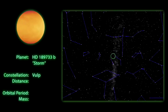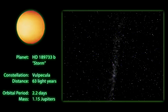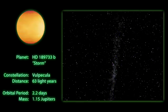A little closer to home, our other X-Planet, Storm, can be found in the constellation Volpecula at a distance of 63 light-years.